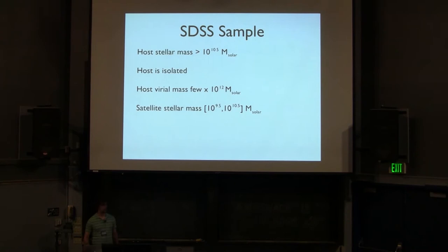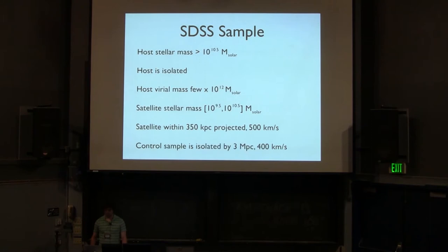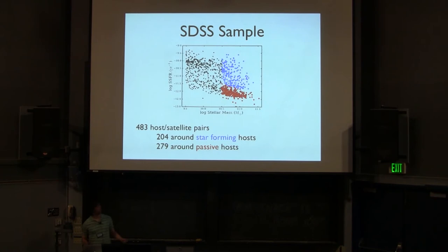So then our satellite galaxies we're looking for fall in the range 10 to the 9.5 and 10 to the 10.5 solar masses. And our selection region for the satellite galaxies is out to 350 kiloparsecs in projected distance and within 500 kilometers per second in velocity space. And then to compare to the satellite sample we've compiled a control sample of highly isolated satellite sized objects that have no objects as massive or more massive within 3 megaparsecs and 400 kilometers per second in velocity space. So here's what our sample looks like in a specific star formation rate versus stellar mass space. We ended up with 483 host satellite pairs. And we took the hosts and divided them according to their membership in either the blue cloud or the red sequence. And we ended up with about 280 passive hosts and 200 star forming hosts.